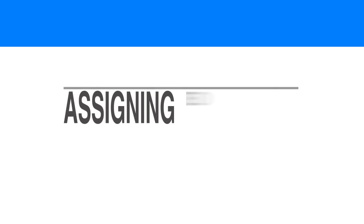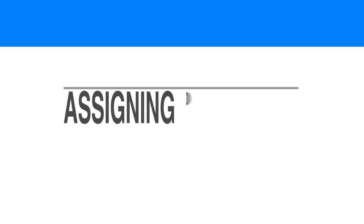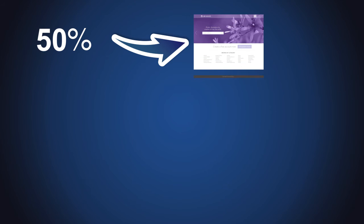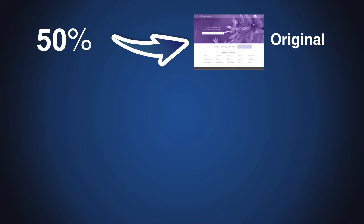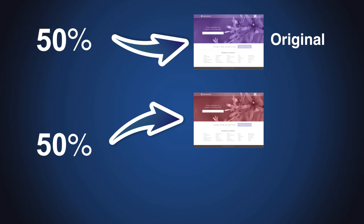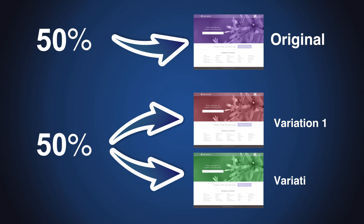Assigning weighted traffic to different variations. Most testing software automatically divides visitors equally between different variations. There are, however, instances where you need to assign different weights to different variations. For example, in an experiment that has an original design and two challengers, you might want to assign 50% of the traffic to the original design and split the remaining 50% of the visitors between variations one and two.